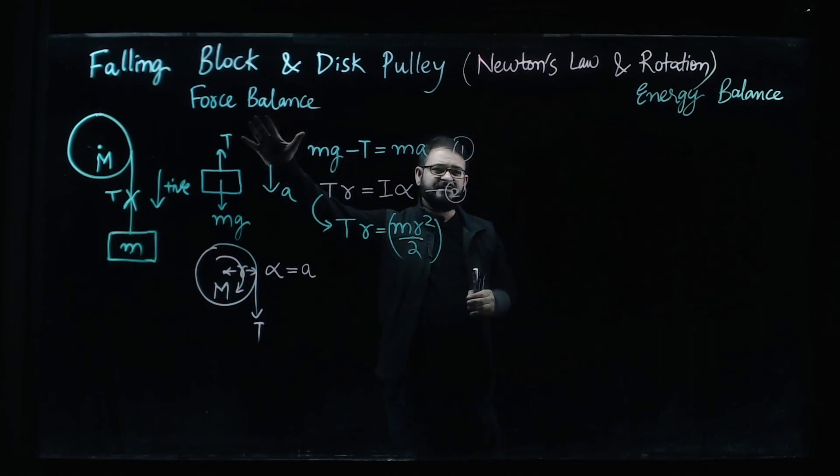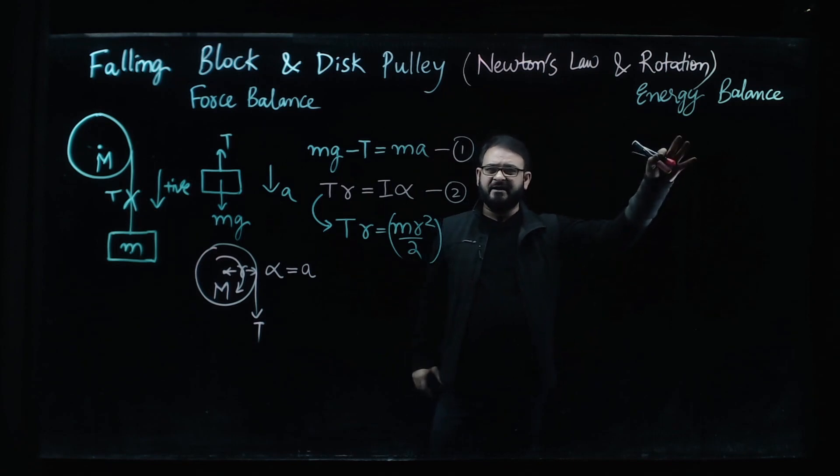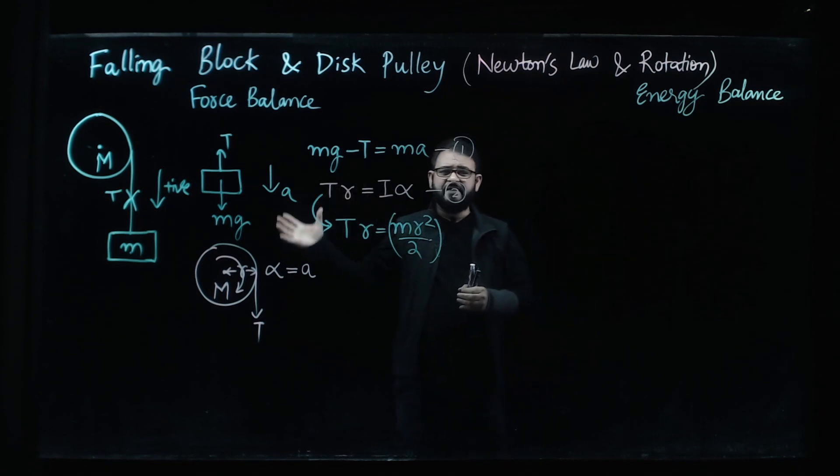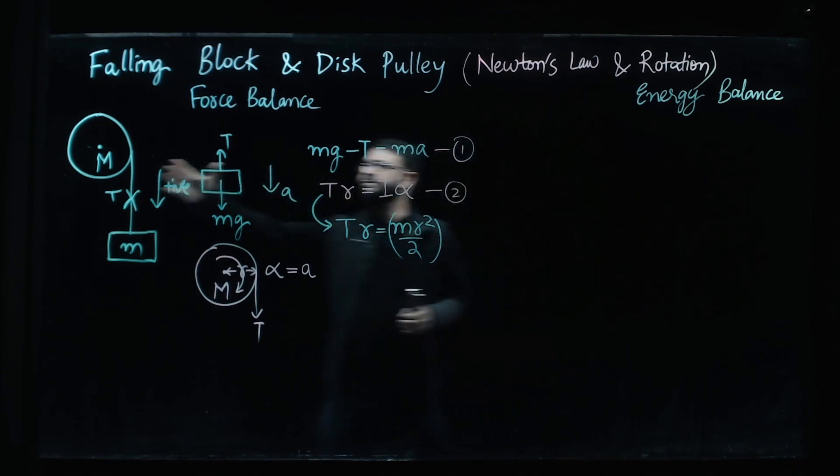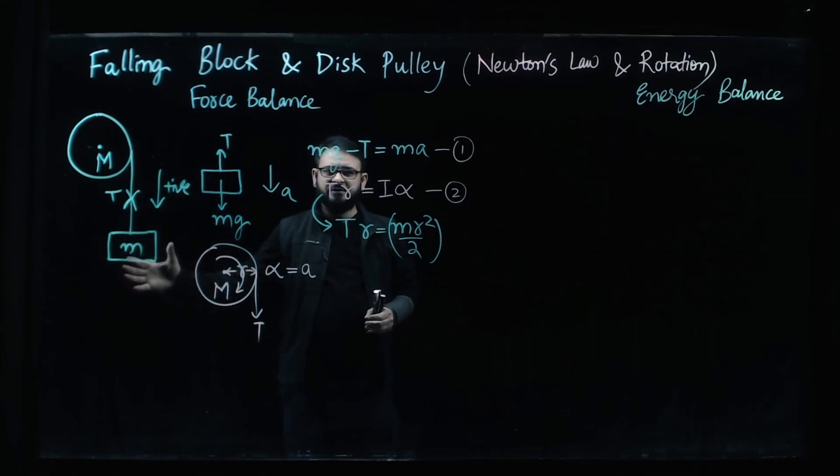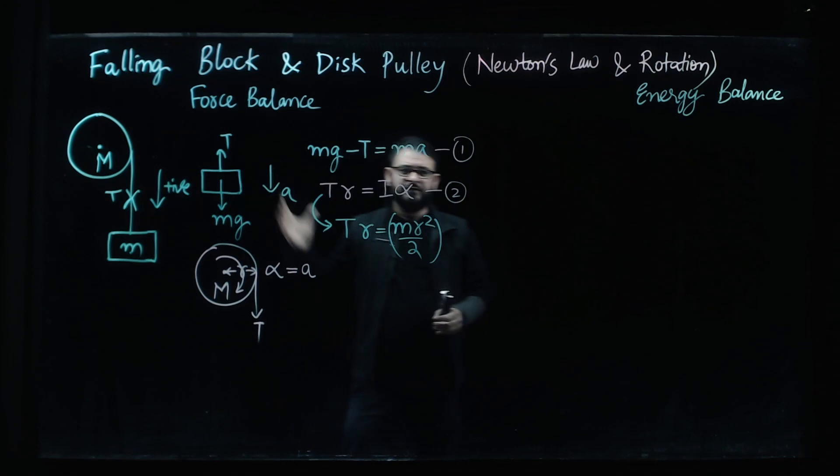One is the force balance. The second is the energy balance. Now our example problem involves a falling block connected by a string to a rotating pulley.